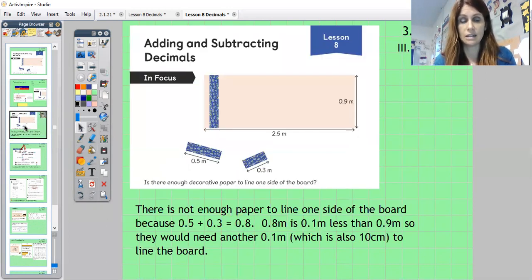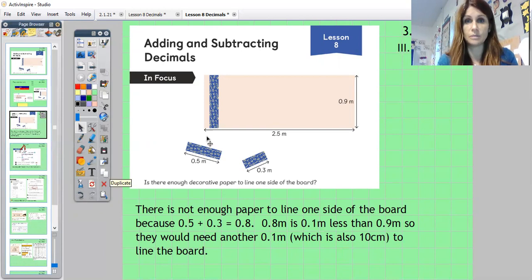We probably already know that the answer is no, we can't. So let's have a look at the answer then. 0.8 is not enough, is it, because we need a minimum 0.9. So the answer would be there's not enough paper to line one side of the board because 0.5 plus 0.3 equals 0.8. But then we have to go on to say why it doesn't cover a side of the board. So 0.8 meters is 0.1 meters less than 0.9 meters. We've got to explain that bit. So they would need another 0.1 meters, which is also 10 centimeters, so we're looking at our converting there as well.